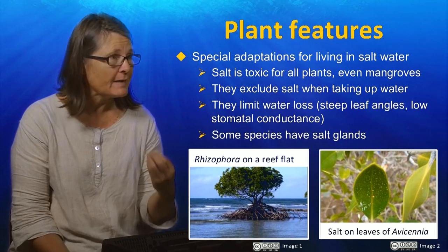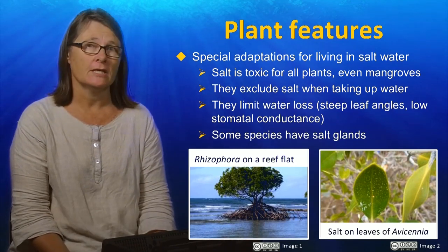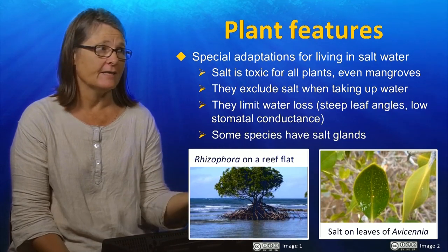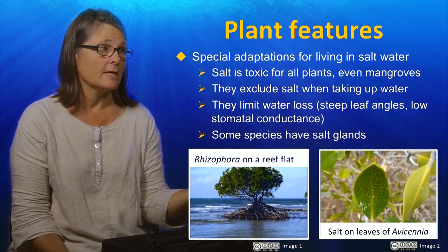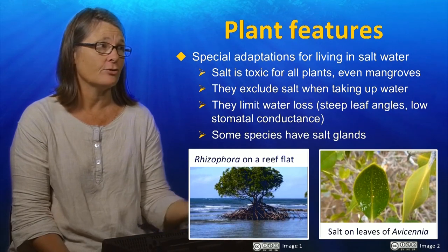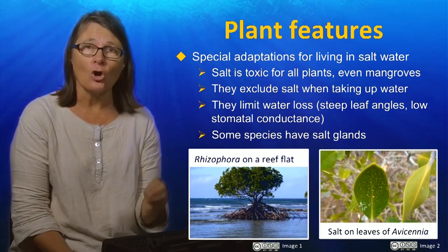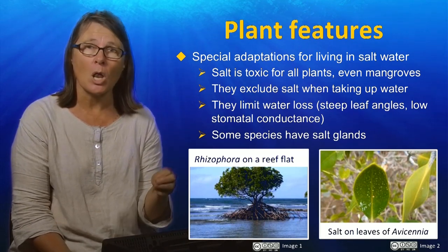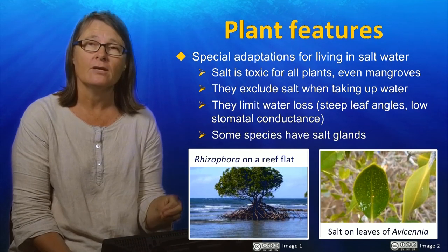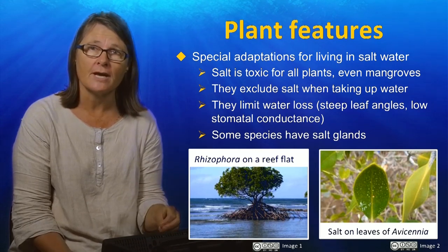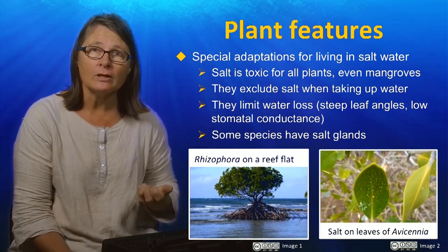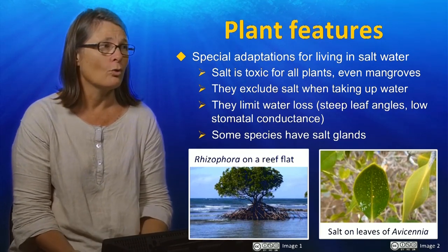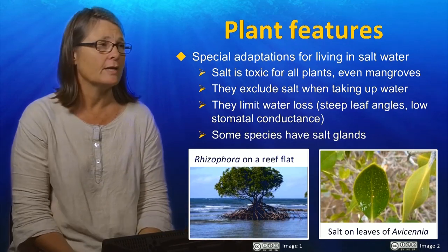They have very special features for living in salt water and also living in areas where they are inundated, like this tree that's sitting on a reef flat in this first image. Now salt is toxic for all plants, even for mangroves, so they have to do a lot of metabolic work in order to exclude the salt at the root surface and only extract fresh water or mostly fresh water from the water that inundates them with each tide.